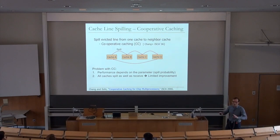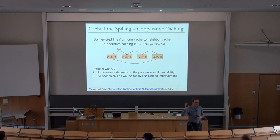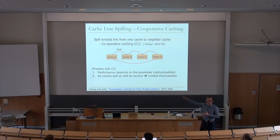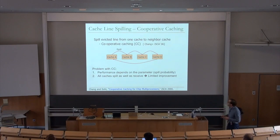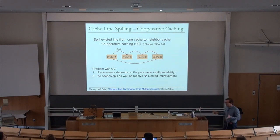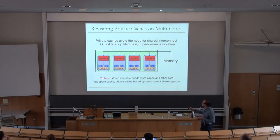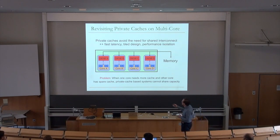This is one of the earlier incarnations of cooperative caching, an idea also used in distributed systems. In distributed systems a node can run out of disk or cache space and spill to another node. Multi-core systems are becoming more like on-chip distributed systems, so people have proposed this sort of cache spilling.